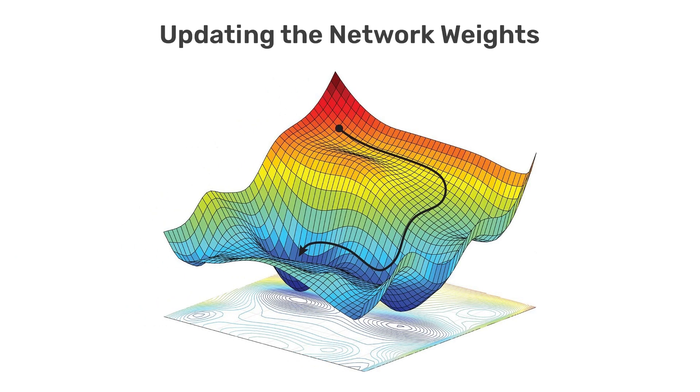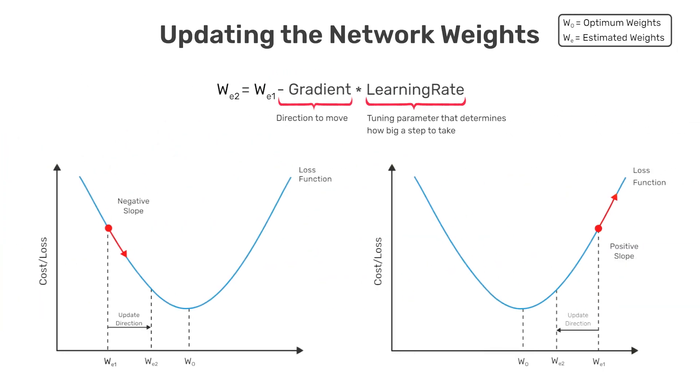In practice, the cost function has many dimensions and is not typically convex, but has many peaks and valleys. In the general case, the slope of the cost function is called the gradient and is a function of all the weights in the network. And therefore, the gradient is a vector in multi-dimensional space. But the approach used to update the weights is conceptually the same as described here.